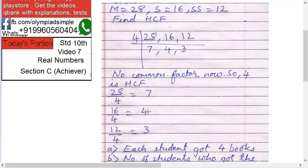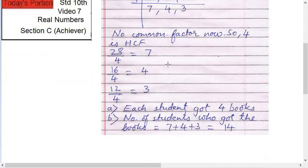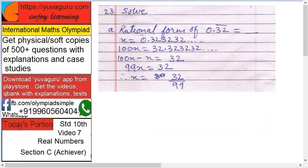Now divide each number of books by the HCF. So, 28 ÷ 4 = 7 students can get maths books, 16 ÷ 4 = 4 students get science books, and 12 ÷ 4 = 3 students get social science books. Each student got 4 books. The total number of students who got the books is 7 + 4 + 3 = 14 students.